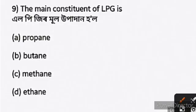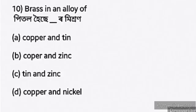Question nine: what is the main constituent of LPG? LPG contains propane and butane. These are the primary components of LPG at a global level.